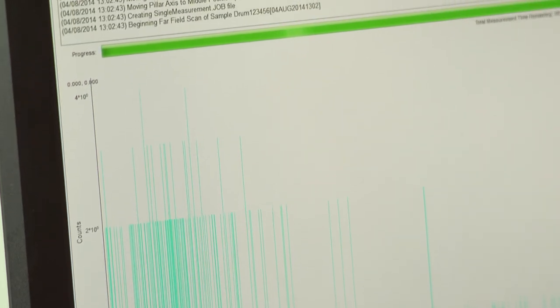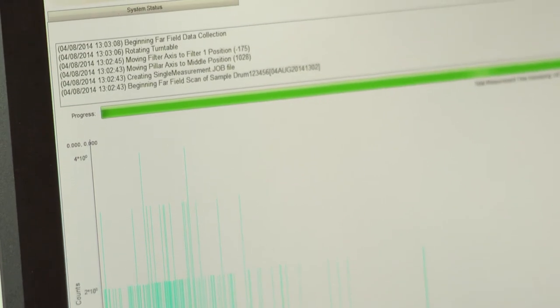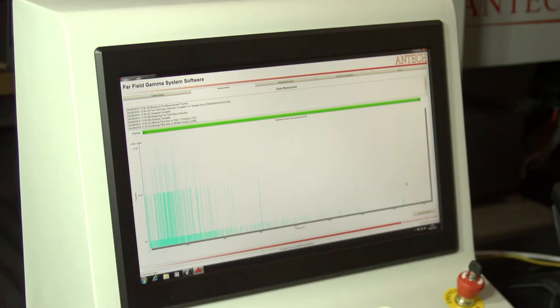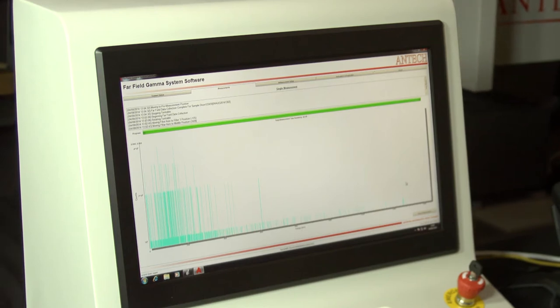For drums with intermediate density and a higher degree of matrix heterogeneity, more accurate measurements can often be obtained using the segmented gamma scanner method.